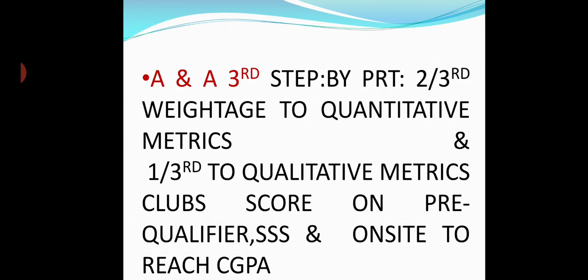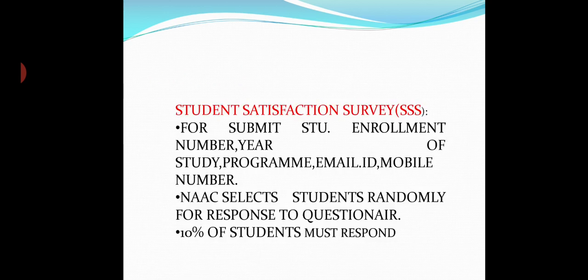The weightage for grading is two-thirds for quantitative data submitted through SSR with documentation and proofs, and one-third is for quality assessment, that is in the hands of the NAAC peer team. For the Student Satisfaction Survey, data such as enrollment ID, roll number, year of entry, program such as BA or B.Sc., email ID, and mobile numbers of the students must be submitted in an Excel sheet. And 10% of the students must respond and participate in the SSS for getting to the second step, that is DVV.